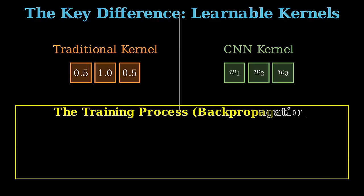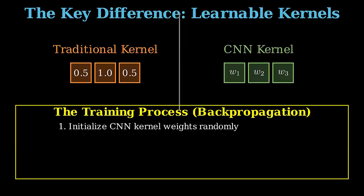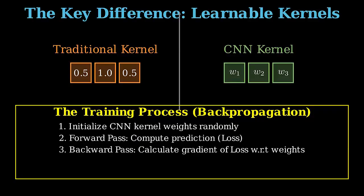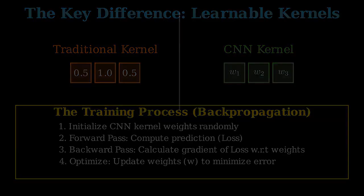So how does the CNN teach itself what the best kernel should be? It all happens inside the training process. First, the kernels are initialized with small random numbers. The network then runs a forward pass. It uses these random kernels to make a prediction and calculates the overall loss or error. Next, the backward pass or backpropagation calculates the precise gradient. This tells us exactly how much each weight contributed to the final error. Finally, an optimizer uses this gradient information to slightly update the kernel weights. This is like turning a tiny dial to reduce the error. This cycle repeats millions of times until the kernels are perfectly tuned to extract the features that matter most for the task. And that is why a 1D CNN is so powerful.